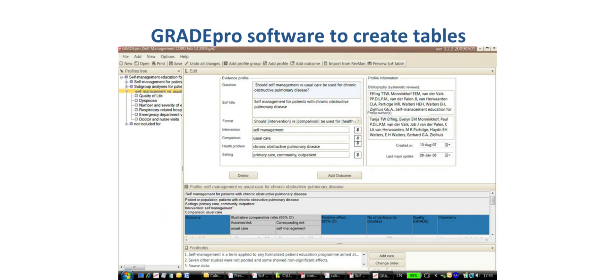A special software called GRADEpro or the GRADE Profiler is used to create summary of findings tables. It does interact with Review Manager and also provides the possibility of preparing complete evidence profiles that transparently lay out judgments that are being made about the underlying quality of evidence for each outcome.